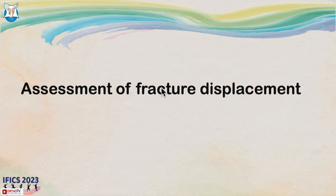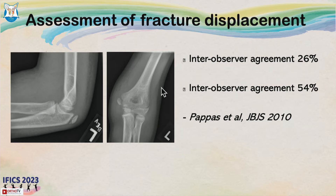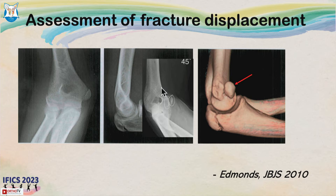Regarding assessment of fracture displacement, as with lateral condyle fractures, AP and lateral views don't give you an accurate assessment of displacement in medial epicondyle fractures either. The fragment is displaced in an anterior direction, so displacement cannot be appreciated on the AP view. On the lateral view, the fragment is superimposed on the distal humerus, and therefore displacement is again not apparent.